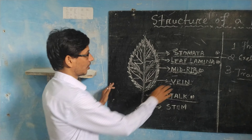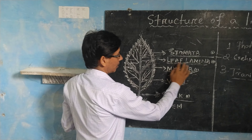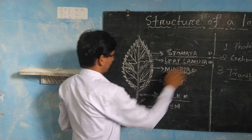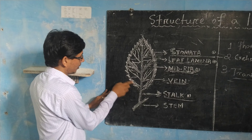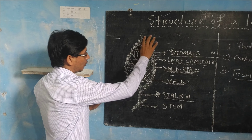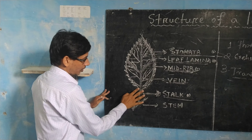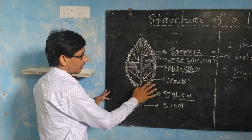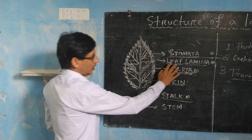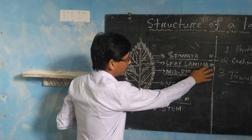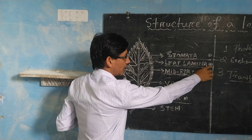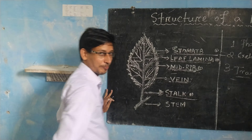The next part is the leaf lamina. This is the outer part of the leaf, and it is called the leaf lamina, or you can call it the leaf blade.